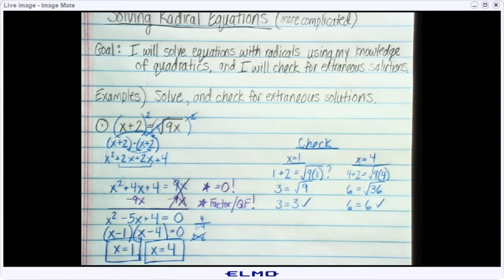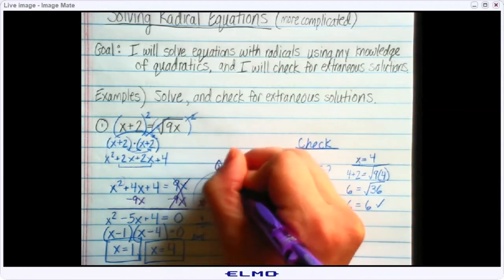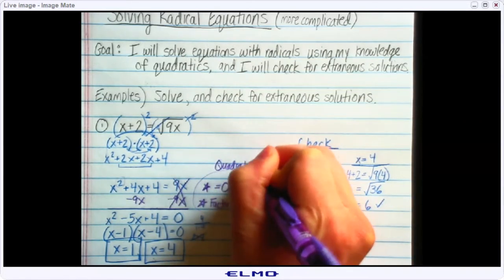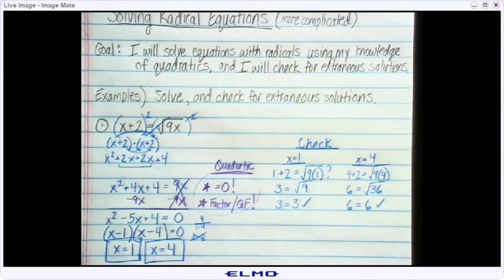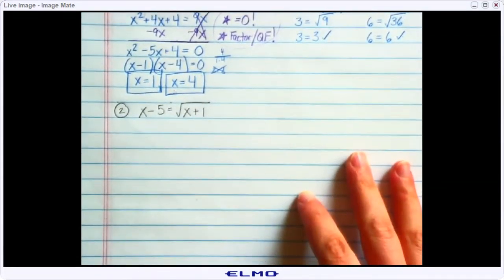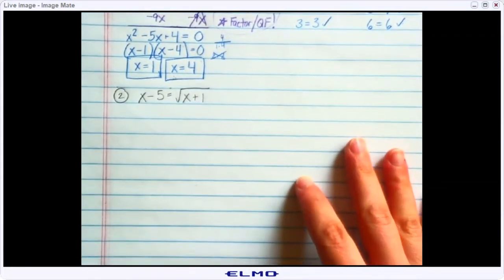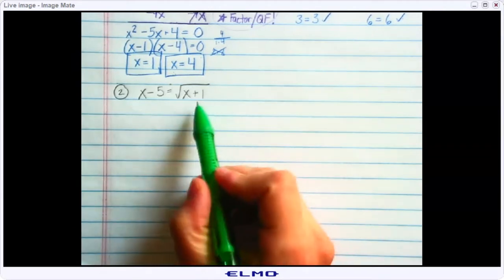The big new part of today's lesson is this: when you have a quadratic — and it's only for quadratics that you would do this — you have to do just a couple of extra steps. Let's try one more example to make sure we've got it down. I've got x minus 5 equals the square root of x plus 1.